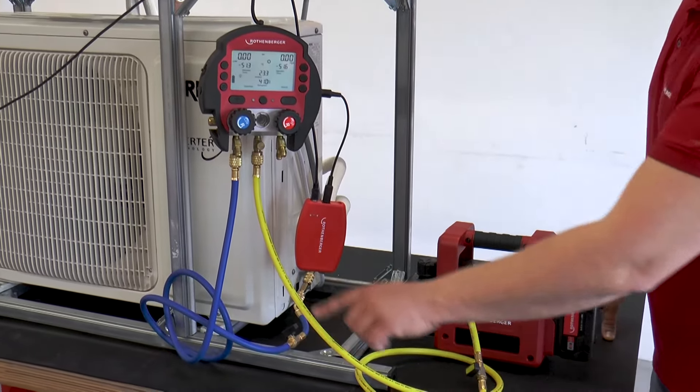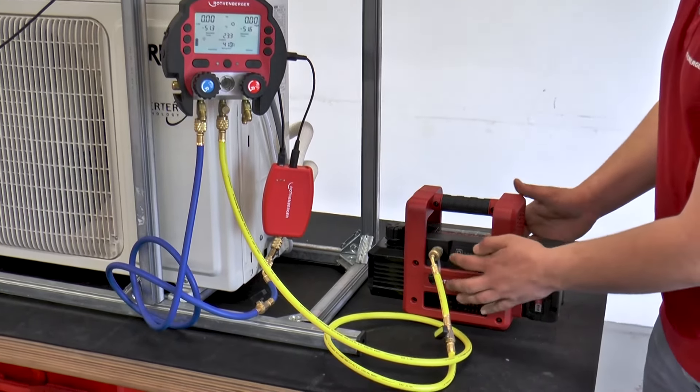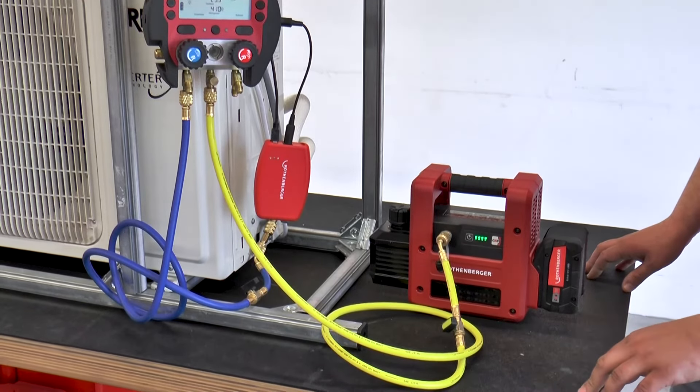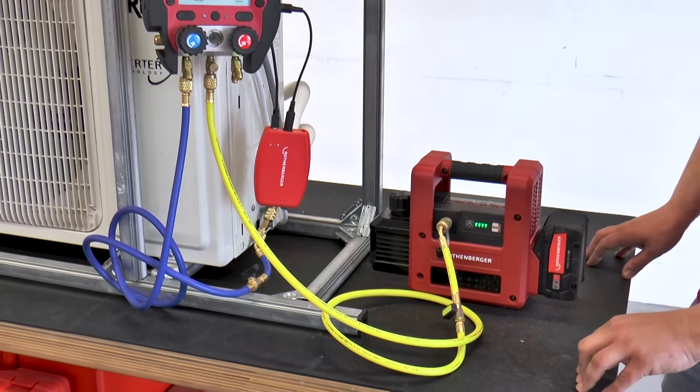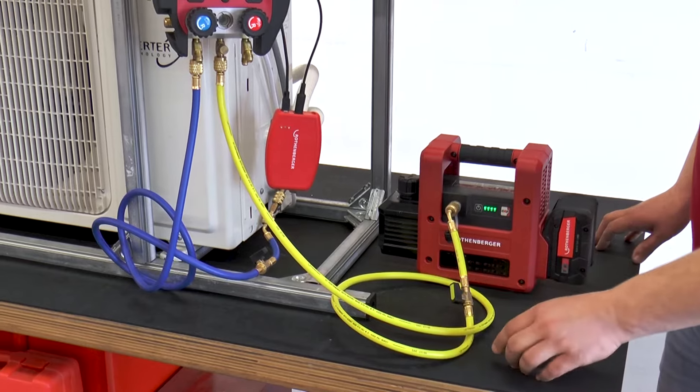For this, the yellow working hose was connected to the nozzle of the vacuum pump. All shut-off valves are closed. The vacuum pump is switched on. Now, step by step, all working paths are opened away from the vacuum pump towards the system.